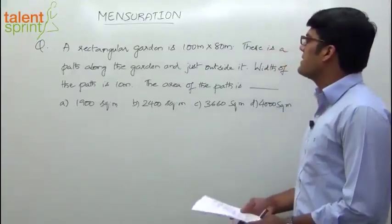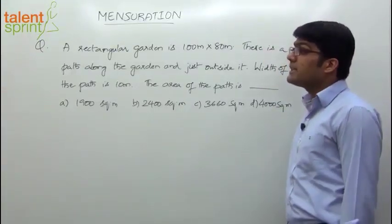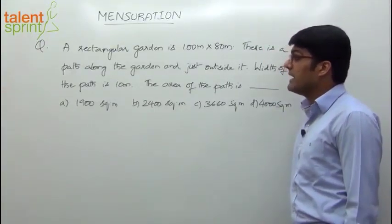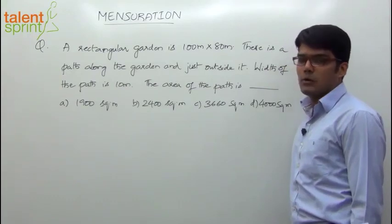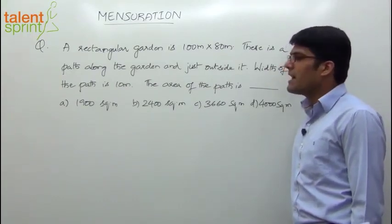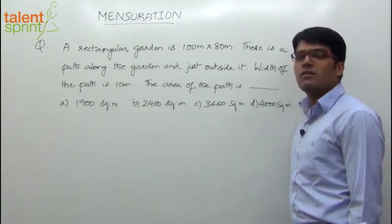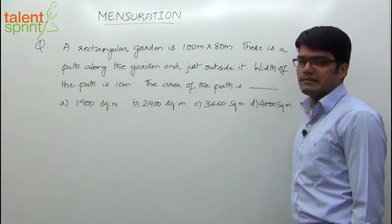A rectangular garden is 100 meters by 80 meters. There is a path along the garden and just outside it. The width of the path is 10 meters. The area of the path is to be found.